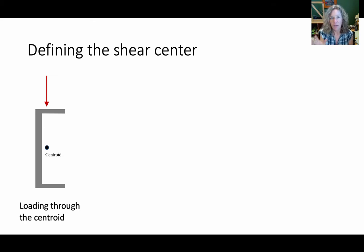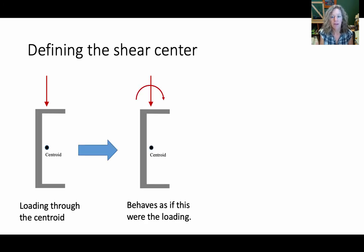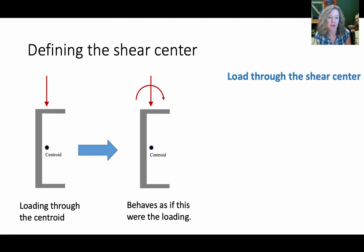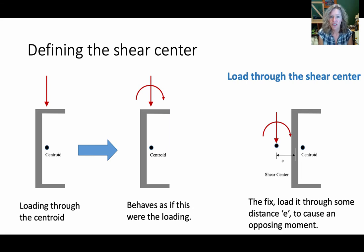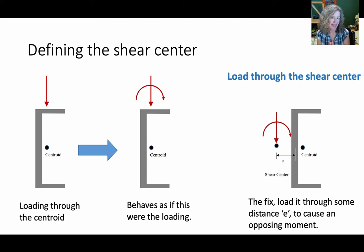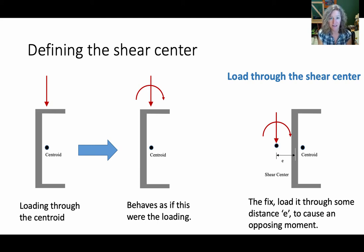Here's our original behavior: we put this load acting through the centroid, but it behaves as if we actually put a torsion on here. So we have to ask, how could we fix this? It turns out there's a point called the shear center, and if we loaded this through the shear center, we could counteract and cause an opposing moment. Members that do not have a vertical axis of symmetry have a shear center — a point through which, if we load it, we can offset that unexpected twisting that comes from not having a symmetric cross section.